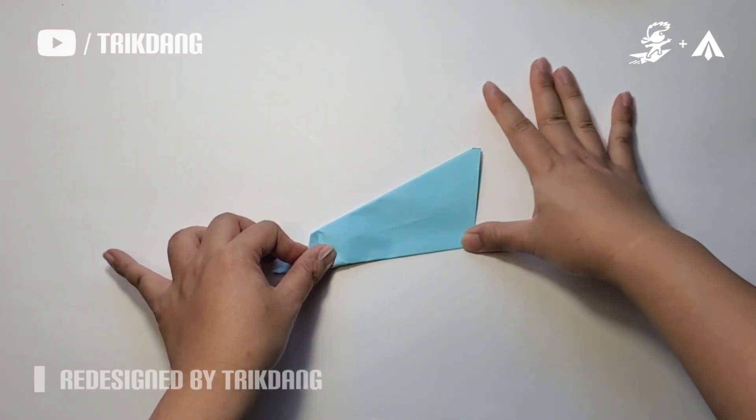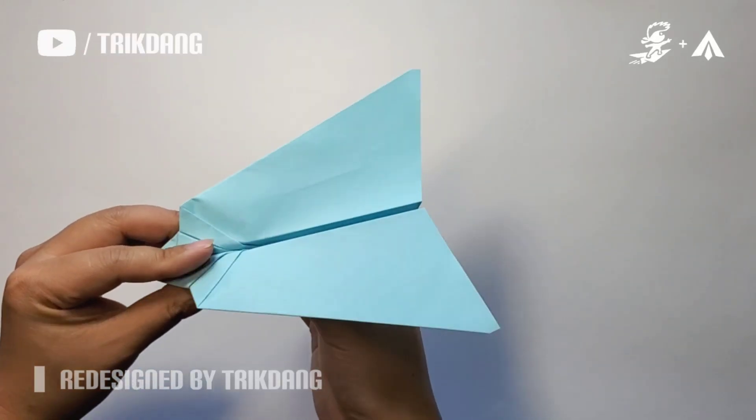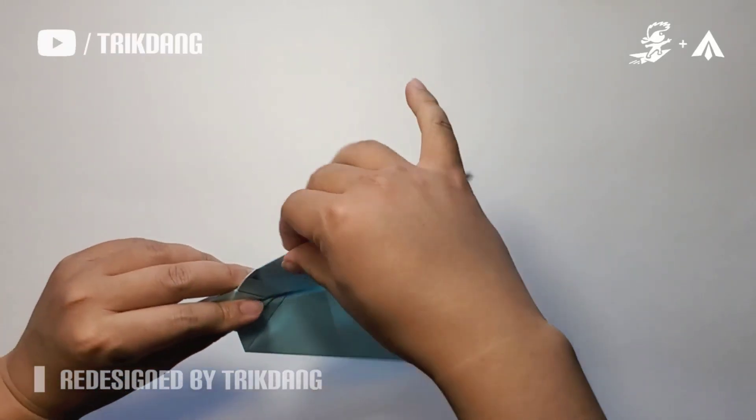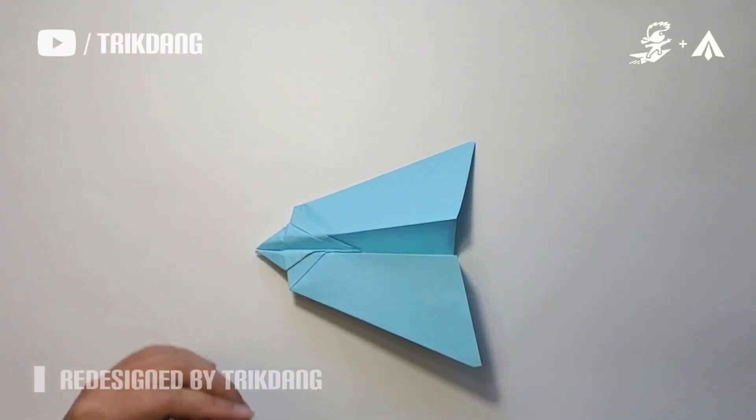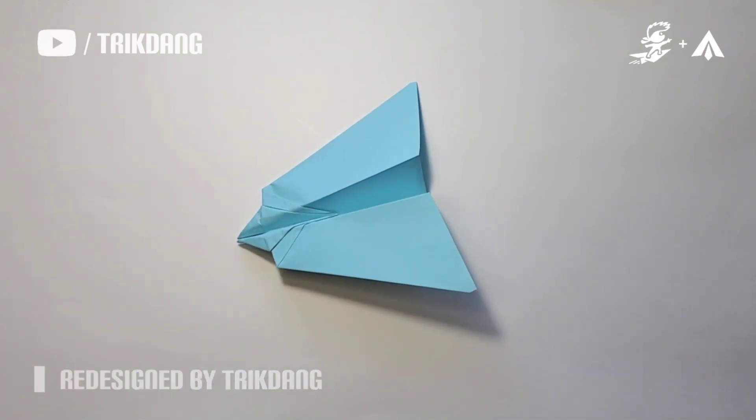But first of all, make sure that you know how to adjust the wings. If you throw it for a long time, this is not a good plane anymore. If you throw it like a thousand times or something, you beat up the paper and it won't fly very well anymore. But for now, this is a very good paper airplane.